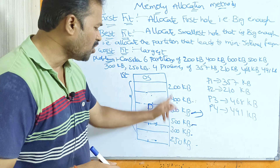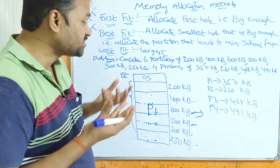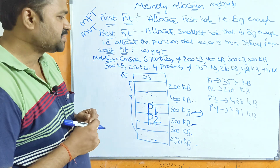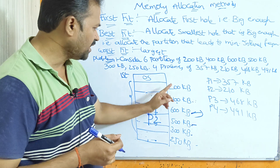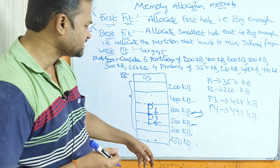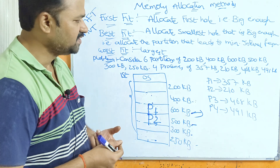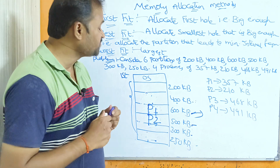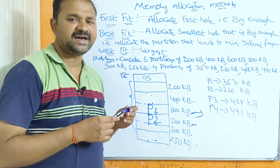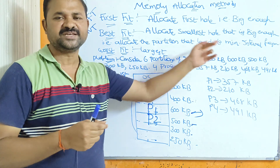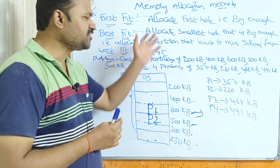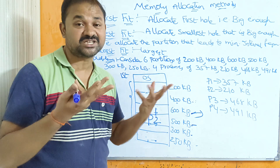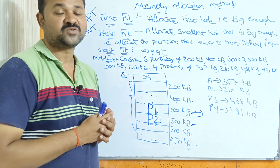For P2 (210 KB) with worst fit, we have five remaining partitions. The biggest is 500 KB, so we store P2 there. For P3 (468 KB), remaining partitions are 200, 400, 300, and 250 KB — all less than 468, so P3 and P4 cannot be stored. Considering all algorithms, best fit is the best because internal fragmentation is minimized, while worst fit is the worst algorithm as it allocates the largest hole, giving more internal fragmentation.